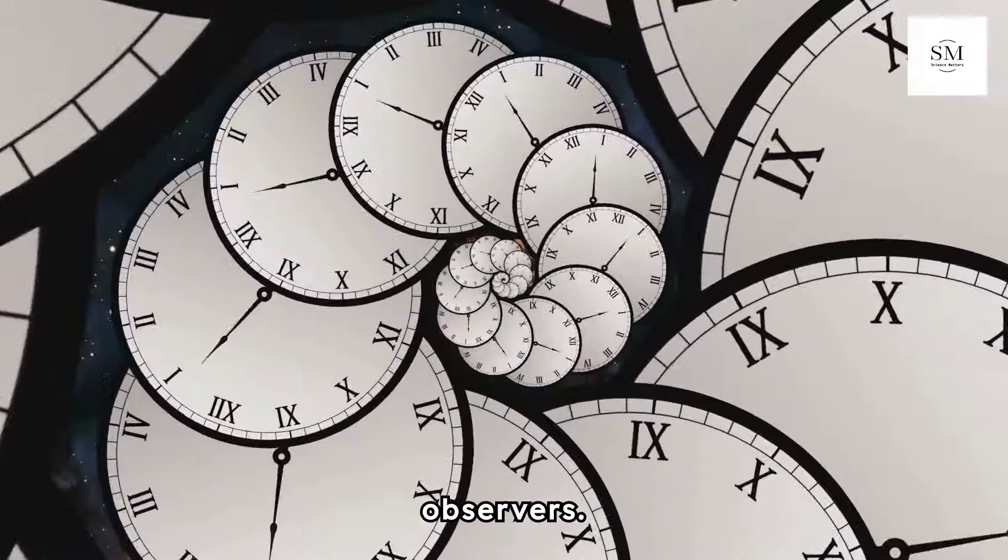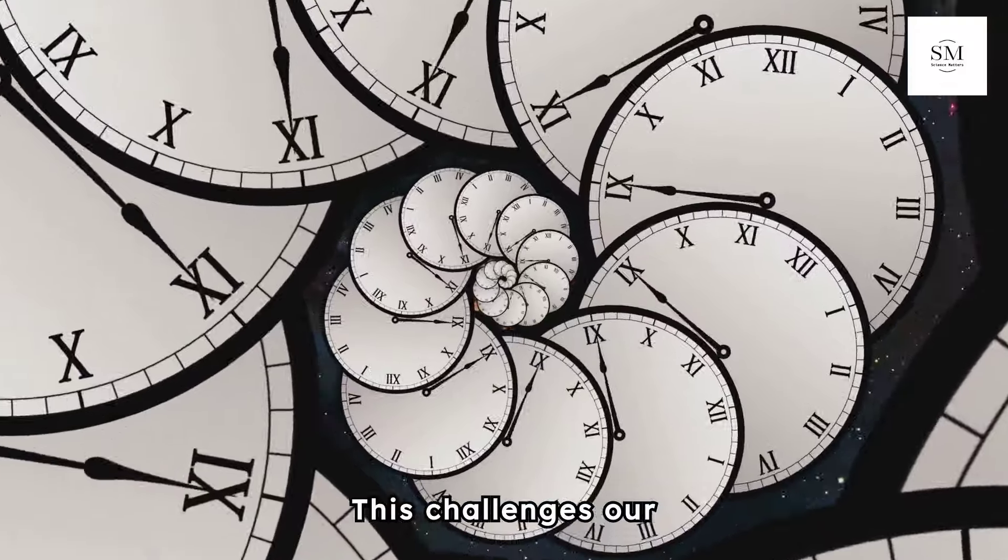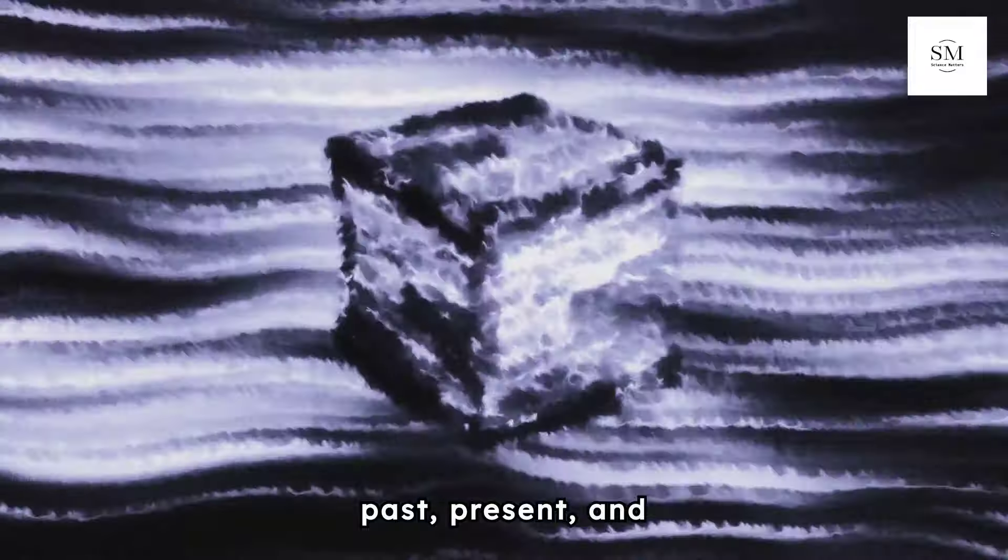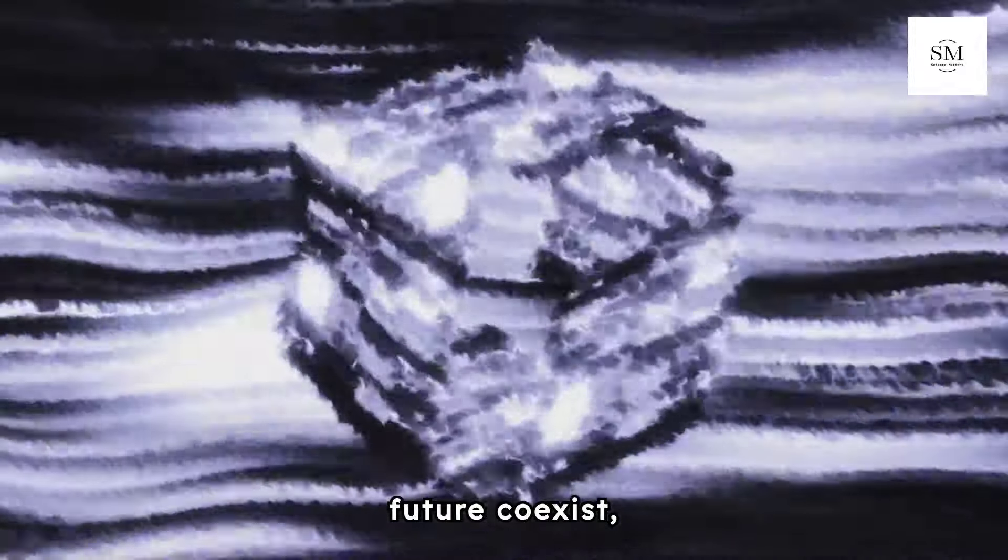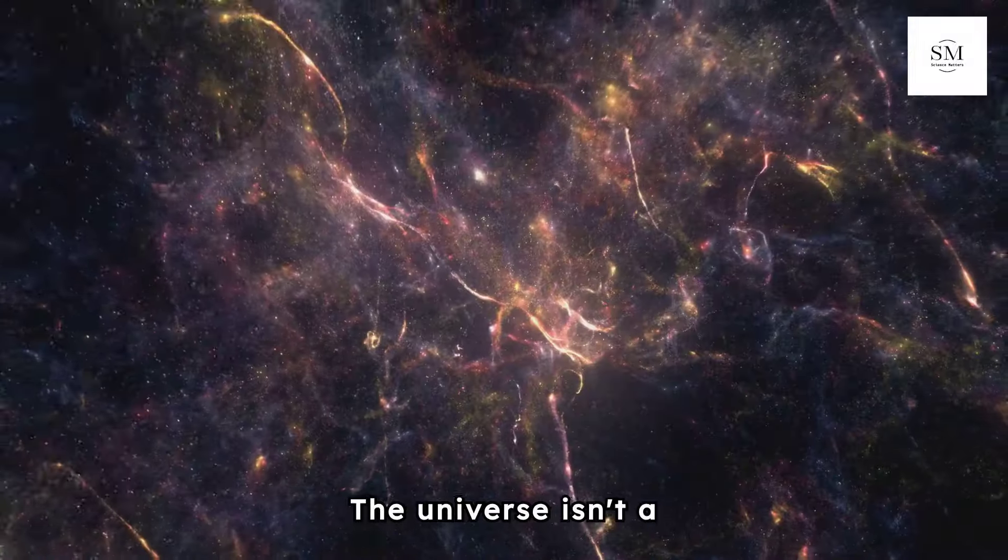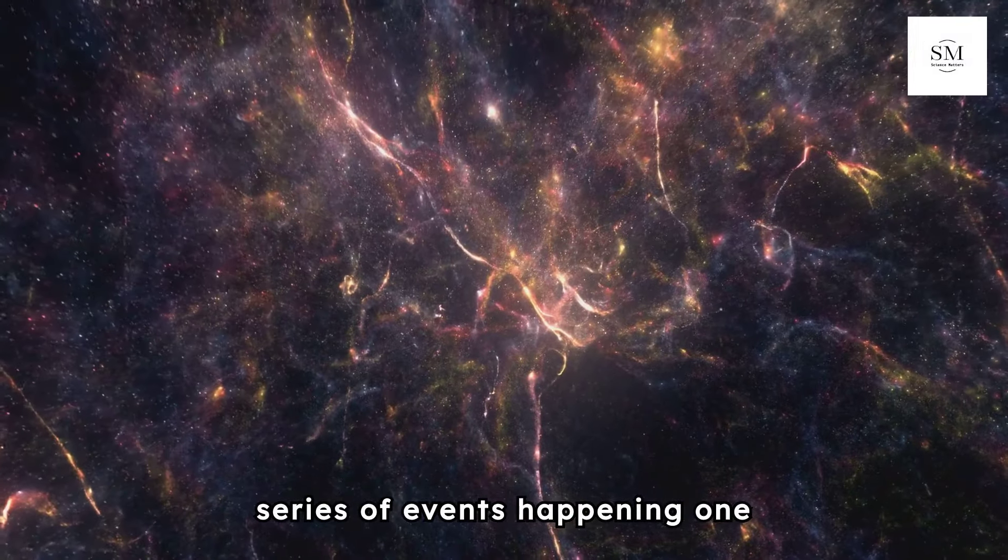This challenges our understanding of time as a linear progression. If time is a block where past, present, and future coexist, then the distinction between them is an illusion. The universe isn't a series of events happening one after the other, but a static block where everything exists simultaneously.